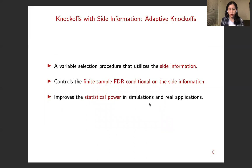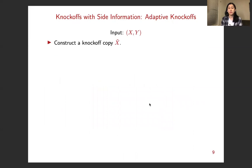So based on the knockoffs framework, we proposed the adaptive knockoffs. It is a variable selection procedure that uses the side information. It controls the finite sample FDR conditional on the side information. And it shows improvement in statistical power in both simulations and in real applications.